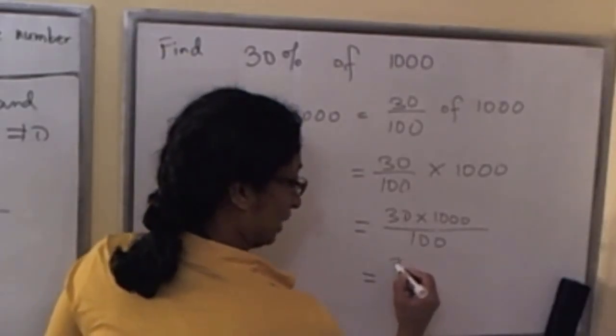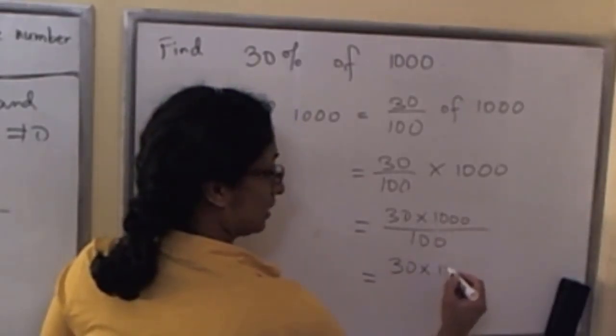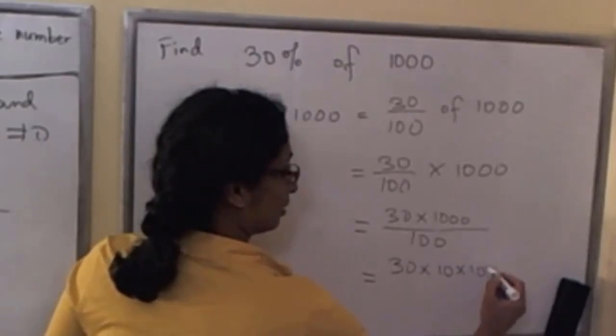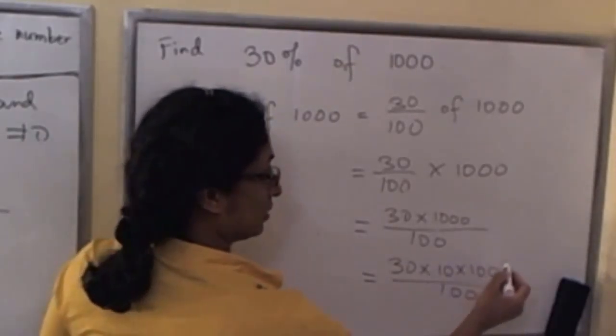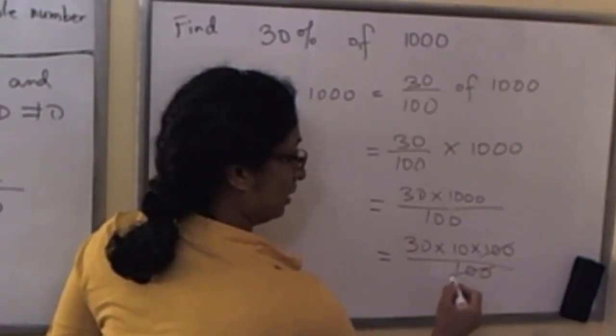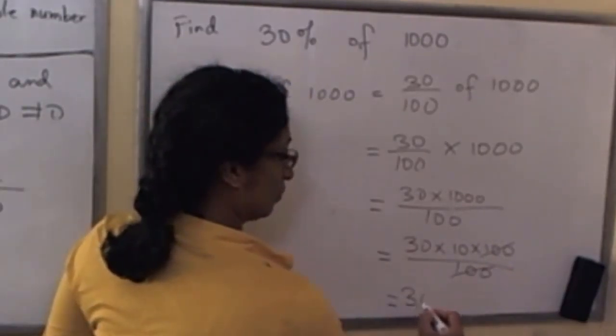And if you like I'll give you another step. Rewrite 1000 as 10 times 100 over 100. Now using the cancellation law of fractions you can cancel this 100 and 100, and you'll be left with 300.